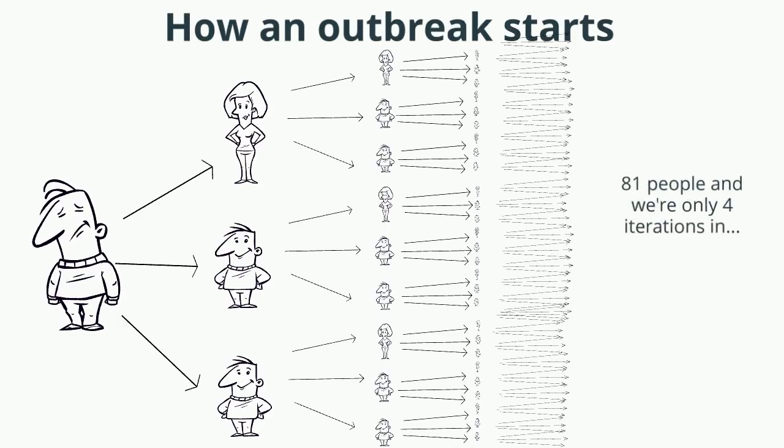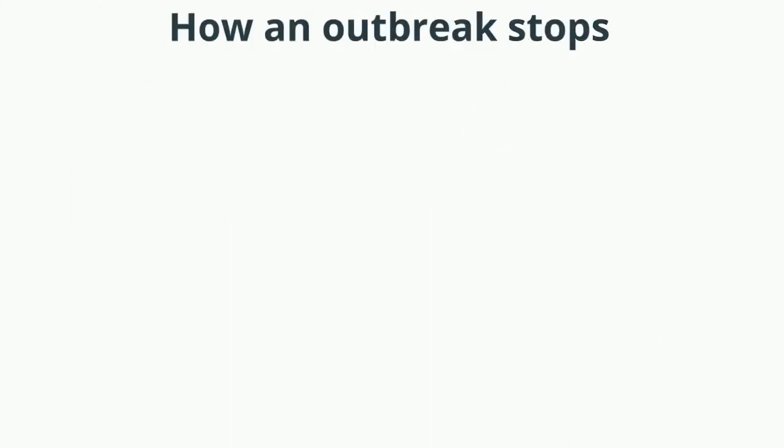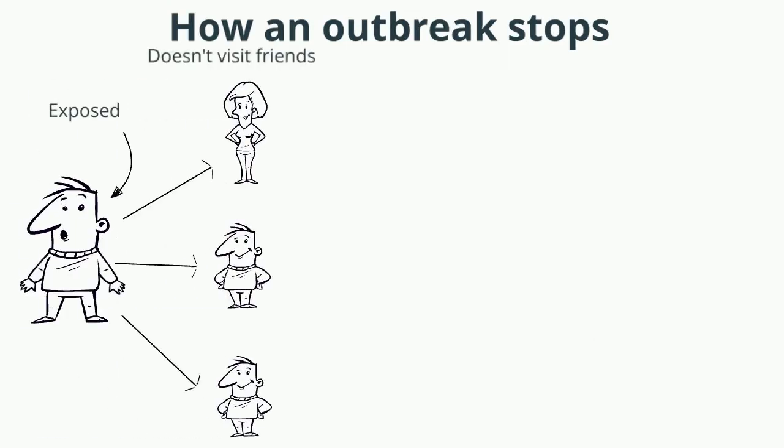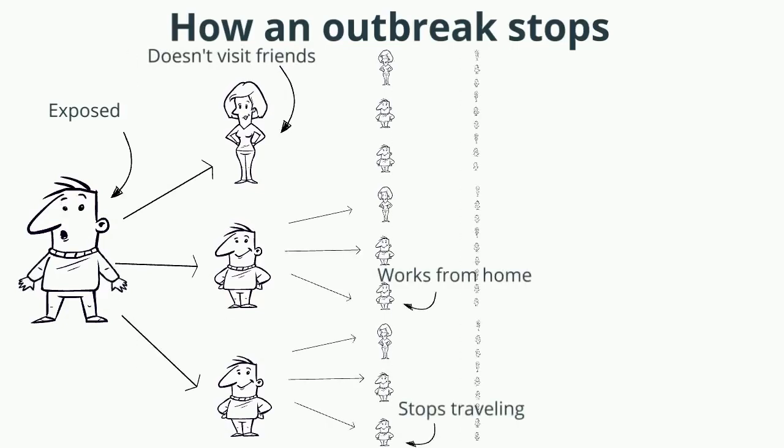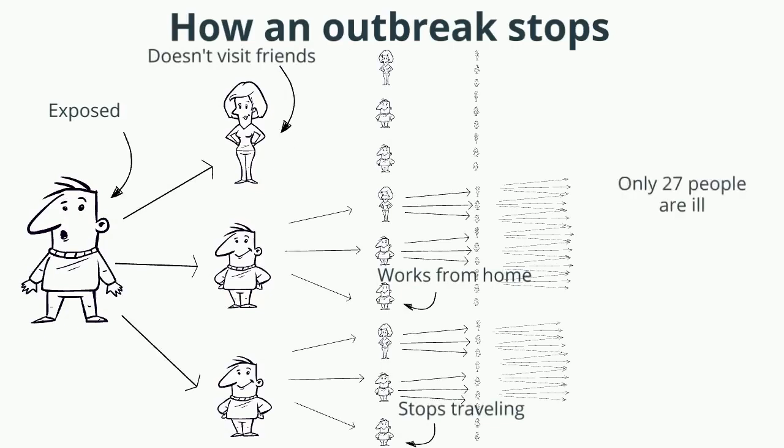Not to worry, we can do something different to keep this from happening. What if after Bob infected his friends, just three people in this chain change their behavior—like not going out, working from home, or maybe they stop traveling because they don't feel well? In this case, we can cut the number of infected to about one-third. This is how we flatten the curve. But what does that really mean? Let's pretend that this is our maximum healthcare capacity.